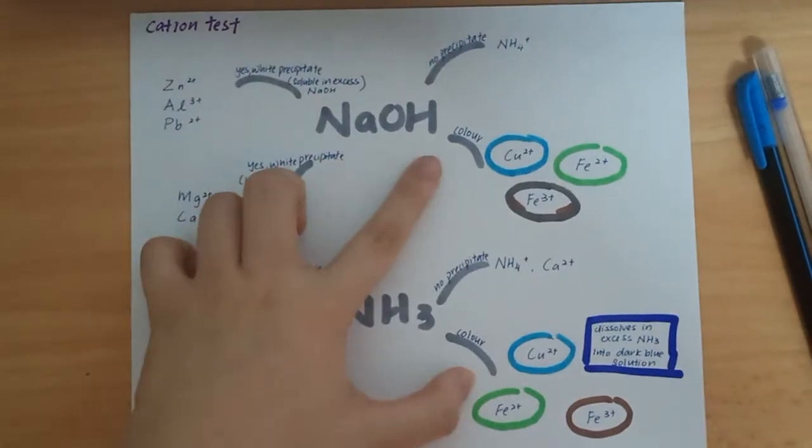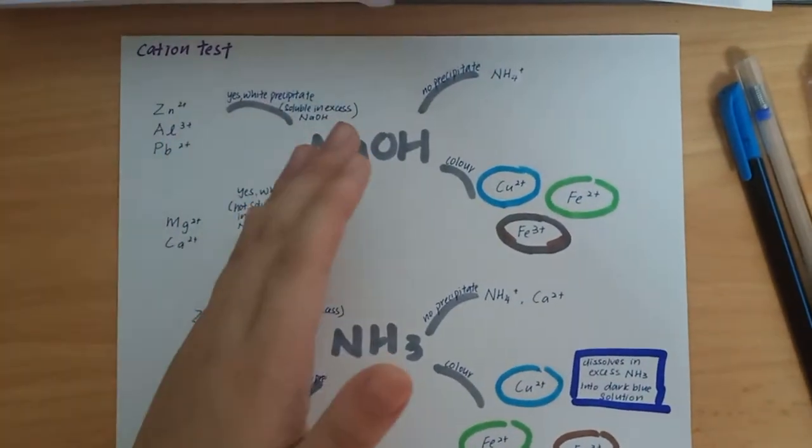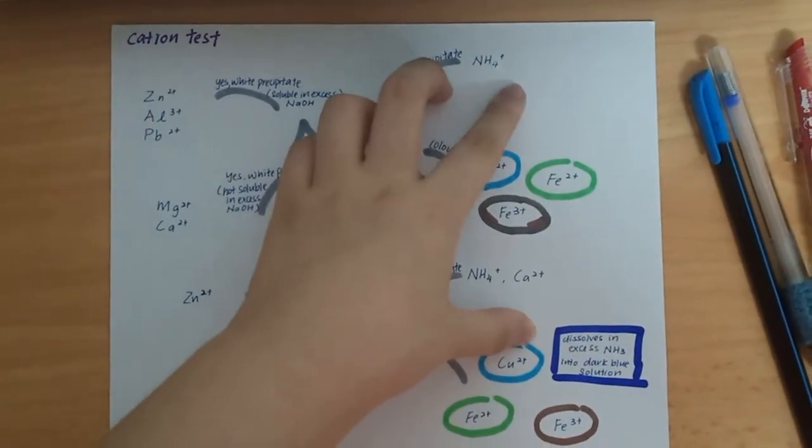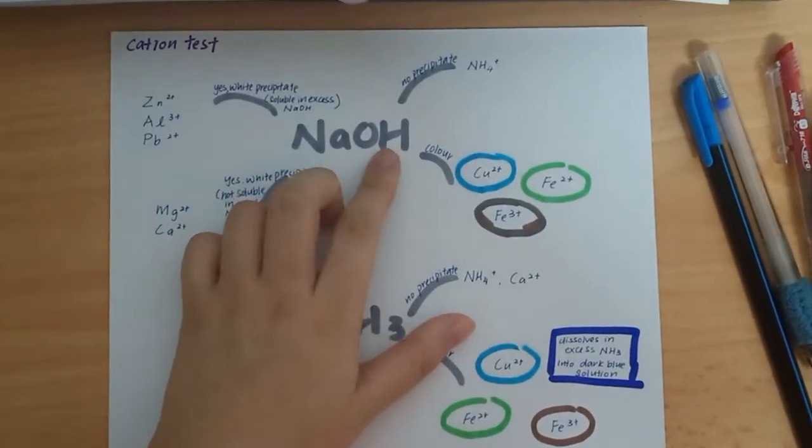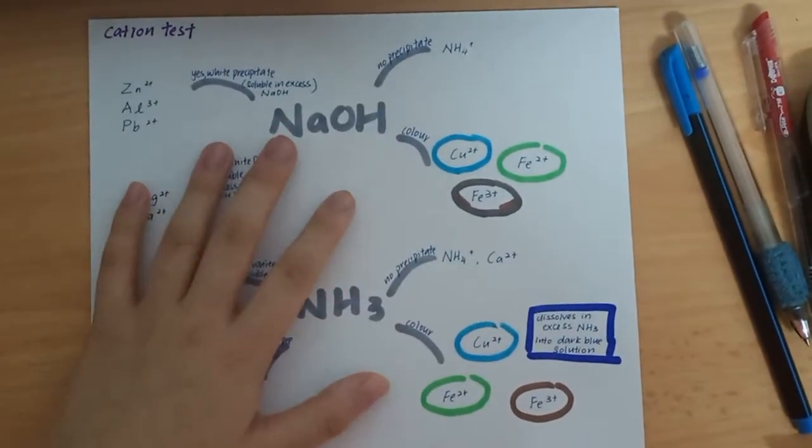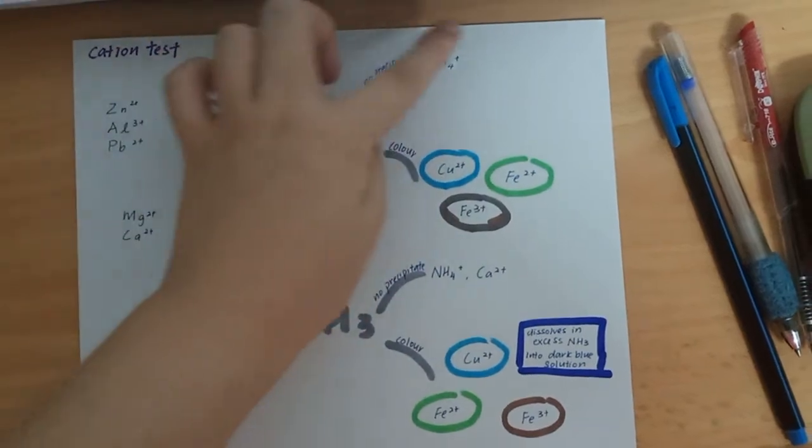Let's just start. The first one, no precipitate, is NH4+. We know that if there's no precipitate form it is NH4+ cation, and you just need to remember this which is very similar to this.